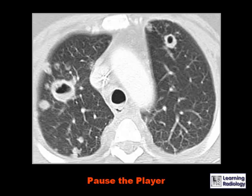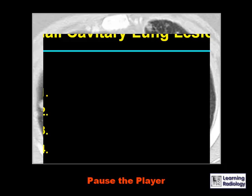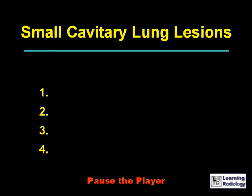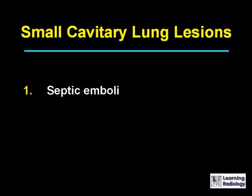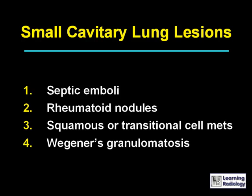This is the next differential: small cavitary lung lesions. There are four causes: septic emboli, rheumatoid nodules, squamous or transitional cell metastases, and Wegener's granulomatosis.